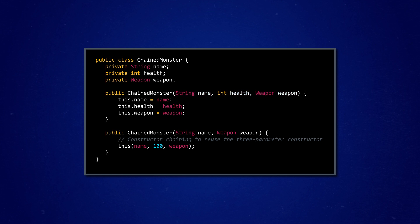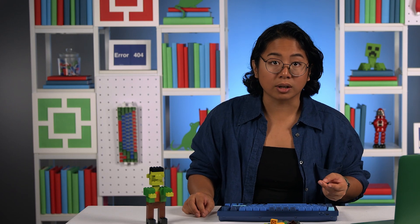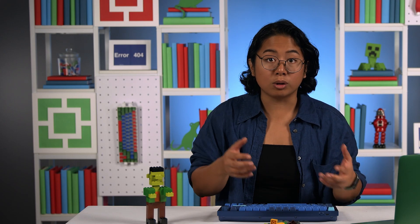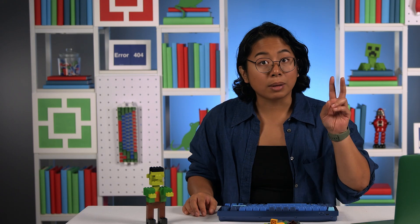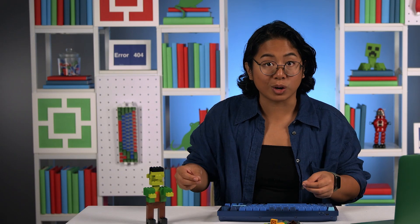But sometimes we want to instantiate a chained monster object and have our program automatically set the starting health level for us. That's what our second constructor method is for — the 2PC. In this constructor, we'll only take parameters for name and weapon, and then autofill a health parameter of 100. We use the this keyword to invoke the 3PC and pass on all of these parameters. Now we have two different options for a user who's creating a new chained monster: if they supply three arguments, we'll use the 3PC with a custom health amount; if they only supply two, we'll jump to the chain constructor — the 2PC — and the health level will be set for us at 100.